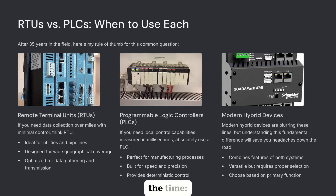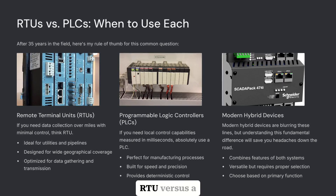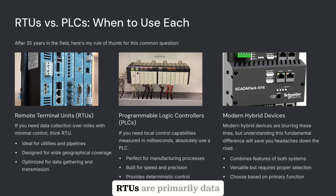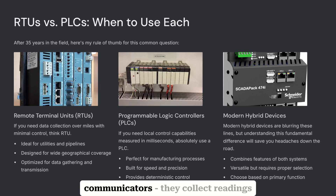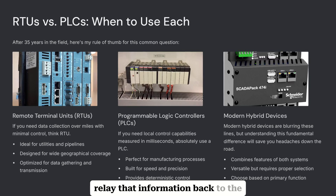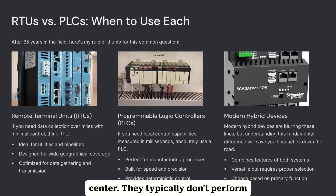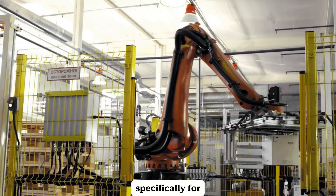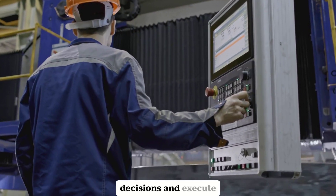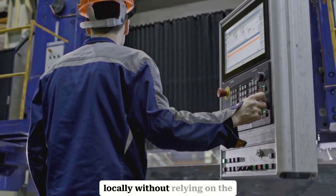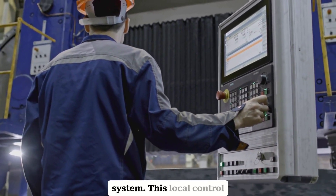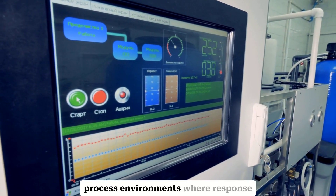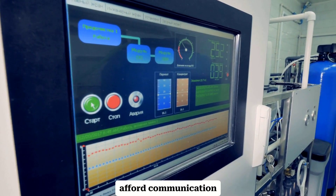A question I get all the time: when should I use an RTU versus a PLC? Here's the critical difference. Traditional RTUs are primarily data gatherers and communicators — they collect readings from field instruments and relay that information back to the control center. They typically don't perform local control functions. PLCs, on the other hand, are built specifically for control. They can make decisions and execute complex control logic locally without relying on the central system. This local control capability is absolutely essential in manufacturing and process environments where response time is critical and you can't afford communication delays.